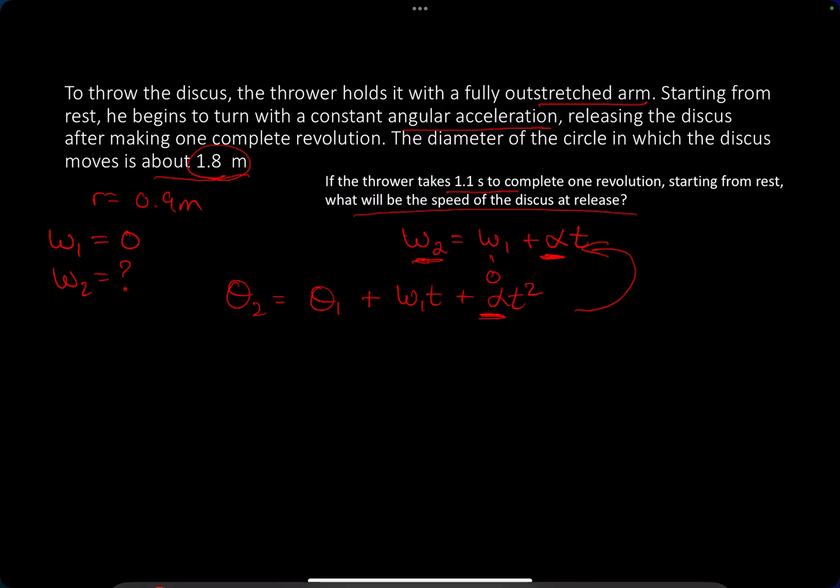The thrower makes 1 revolution. So what's 1 revolution? Starting at 0, finishing at 2 pi.